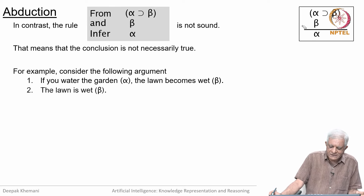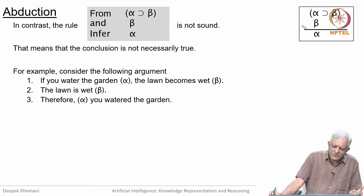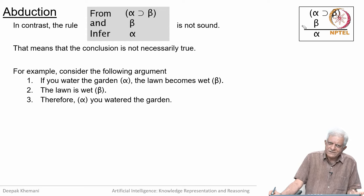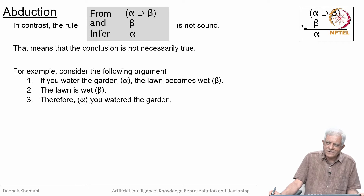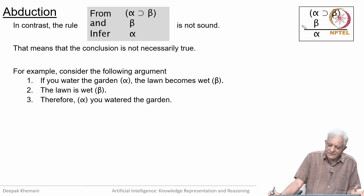Here is an argument found in literature: let alpha stand for 'you water the garden' and beta for 'the lawn is wet.' It is obviously true that if you water the garden the lawn becomes wet. But if somebody tells you the lawn is wet and you infer that you watered the garden, that is not a valid inference — it could simply have been raining. So alpha implies beta is true, but that does not mean that if beta is true then alpha is necessarily true.